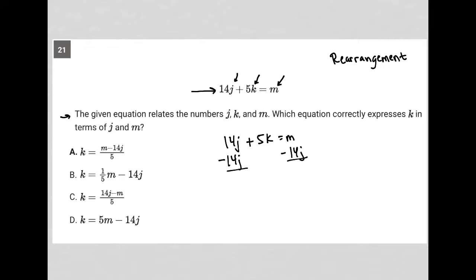So first and foremost, I'll have 5k equals m minus 14j.